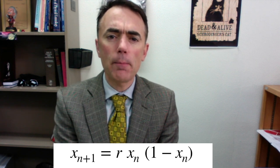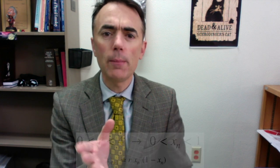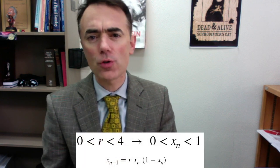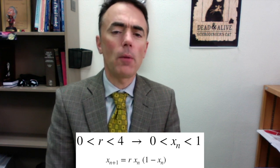Here x is a dimensionless population and r is the rate. We pivot between 0 and 4 so that the population will be between 0 and 1. This is the logistic map.